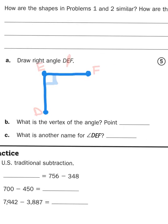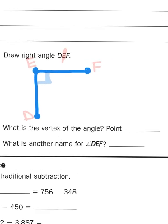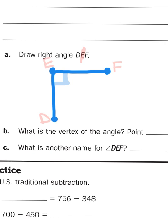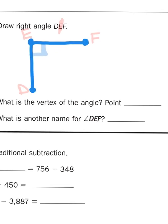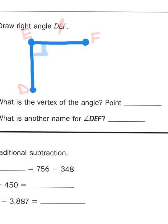Now, another name for DEF would be just the reversal of those points. Instead of saying DEF, I could just call this angle, angle FED.